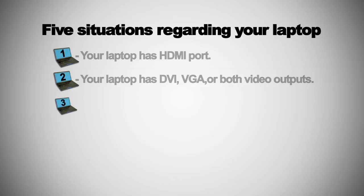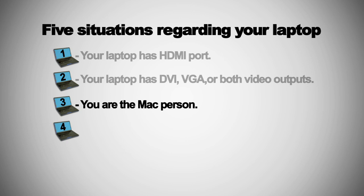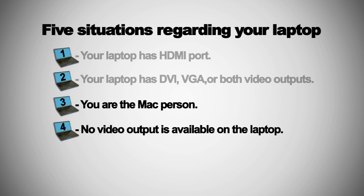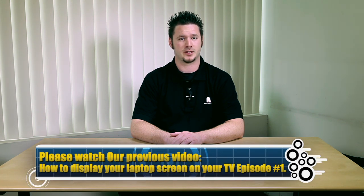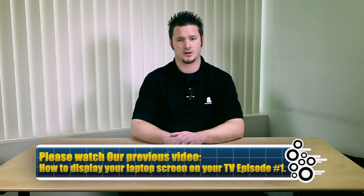I'll explain about three different situations regarding your laptop of the five situations. Situation number three: you are a Mac person. Situation number four: your video output is not available on the laptop. Situation number five: you have a VGA video output but your TV does not have a VGA input. For situations one and two — your laptop has an HDMI port, DVI, VGA, or both — please refer to our previous tutorial, how to display your laptop screen on your TV, series 1. This will cover most situations if you are a PC user, unless you have a broken video output on your computing device.